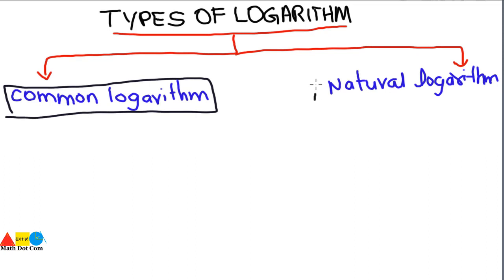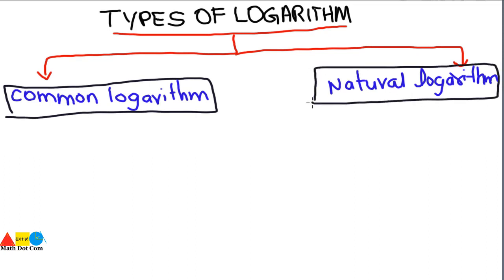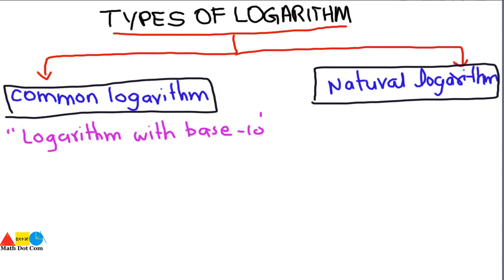We have classified these two types on the basis of the base of the logarithm. It may have different bases such as two, five, ten, or three, but the most common types are the common logarithm and the natural logarithm. First of all, we will see what is common logarithm. Common logarithm is defined as the logarithm with base ten.